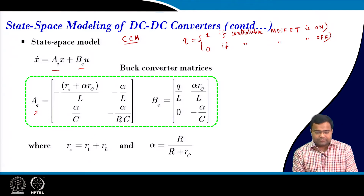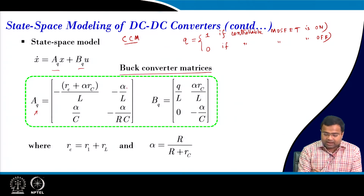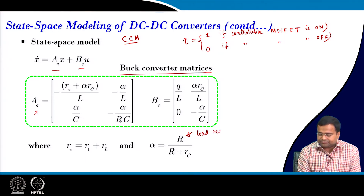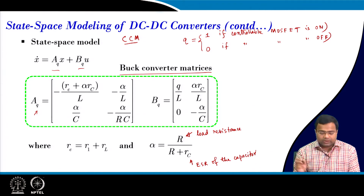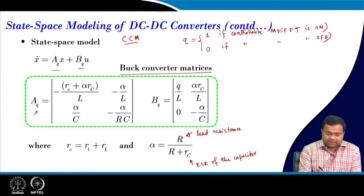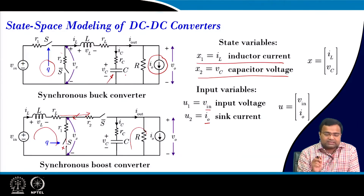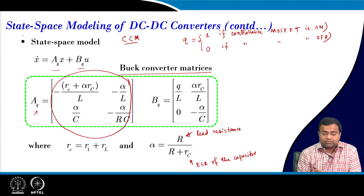Here is the compact form for a buck converter. Alpha equals R divided by (R plus R_C), where R is the load resistance and R_C is the ESR of the capacitor. You will find that for the buck converter, the A matrix is independent of Q, provided that the two on-state resistances are identical. That means if we take R_1 equal to R_2 equal to R, then this A matrix will be exactly the same.